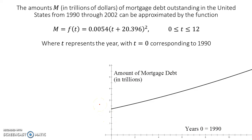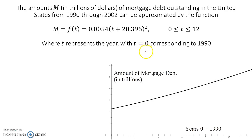In this problem we are given a model for the amount M in trillions of dollars of mortgage debt outstanding in the United States from 1990 to 2002. T represents the year starting in 1990, letting that be time equal zero.